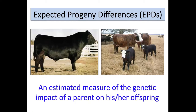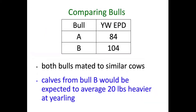EPD stands for Expected Progeny Differences — it's an estimated measure of the genetic impact of a parent, whether the bull or the cow, on his or her offspring. Rather than going through a lot of definitions, the easiest way to explain EPDs is to work through some examples.